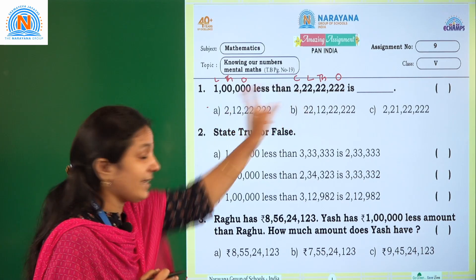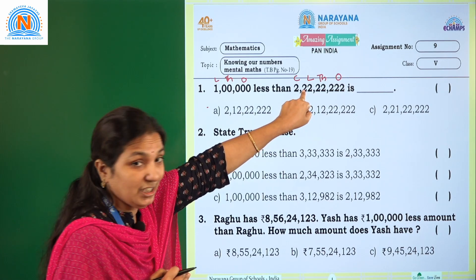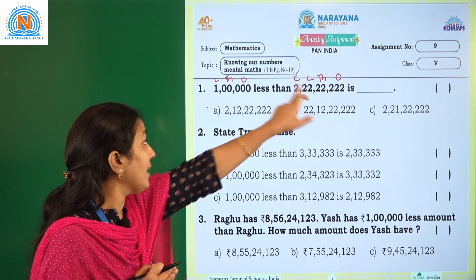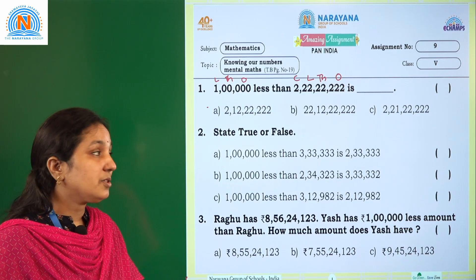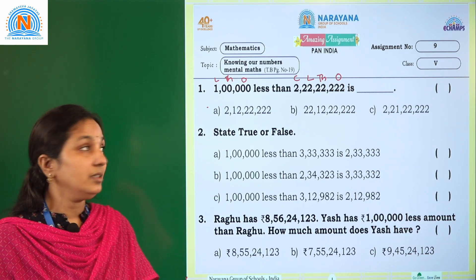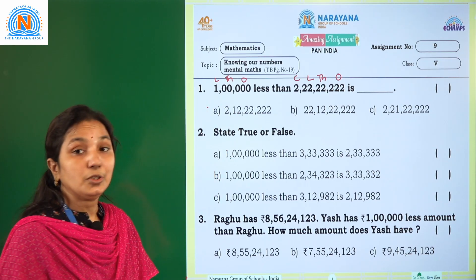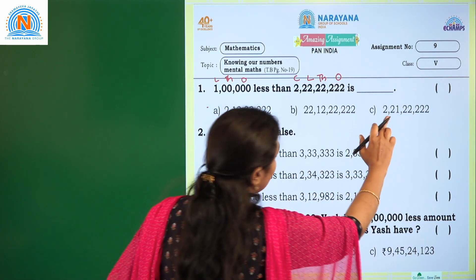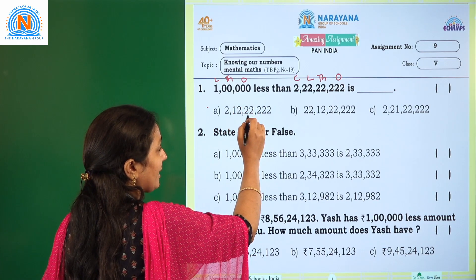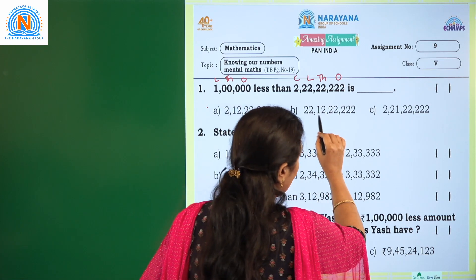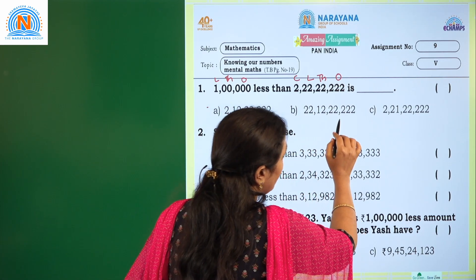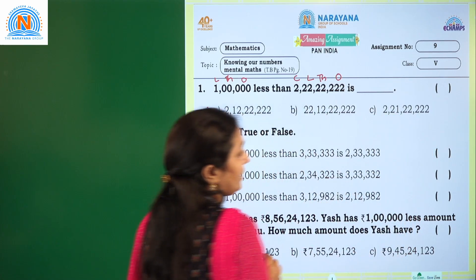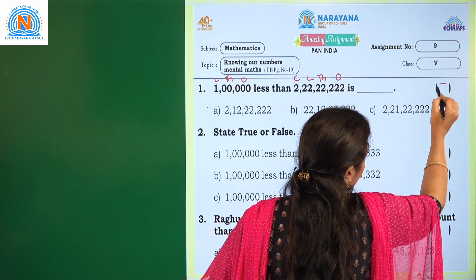So from the lakhs place we can simply subtract. What is the given lakhs place? Here 22 — so in 1 lakh place we have the digit 2. From 2 we are subtracting 1, so 2 minus 1 equals 1. So you will get 2 crore 21 lakh 22,222. Checking the options: option A is 2 crore 12 lakh 22,222 — no. Option B is 22 crore 12 lakh 22,222 — no. Option C is 2 crore 21 lakh 22,222. So our required option is C.